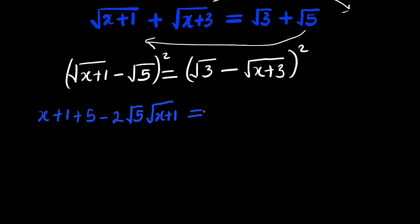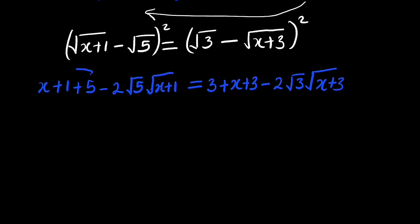You do the same thing to the right hand side. First term squared is going to give us 3, plus second term squared is x plus 3. Then minus 2 multiplied by root 3 multiplied by root of x plus 3. 1 plus 5 is 6. So we have x plus 6 minus 2 multiplied by root 5 multiplied by root x plus 1. This is equal to, we have 3 plus 3 equal to 6. We have x plus 6, then minus 2 multiplied by root 3 multiplied by root of x plus 3.